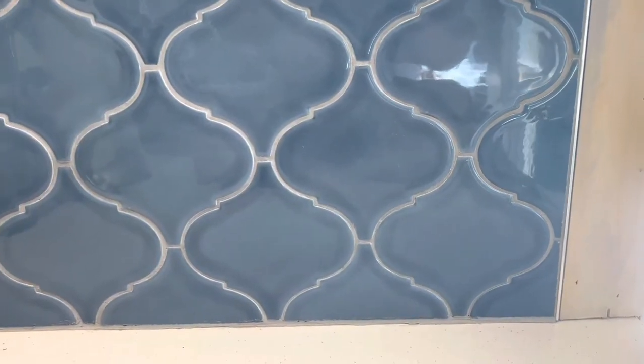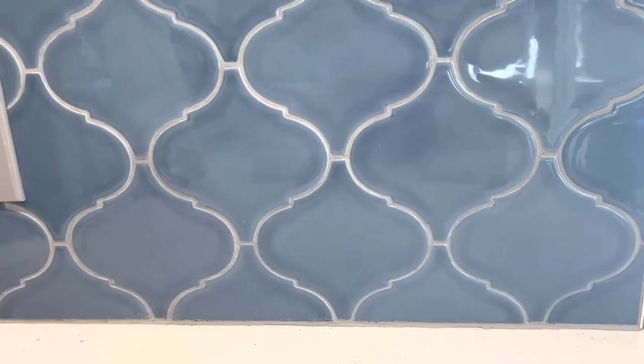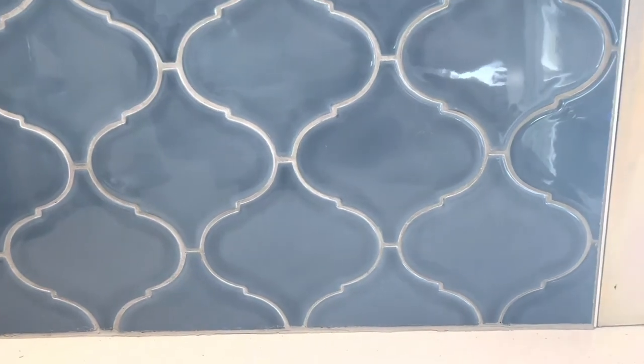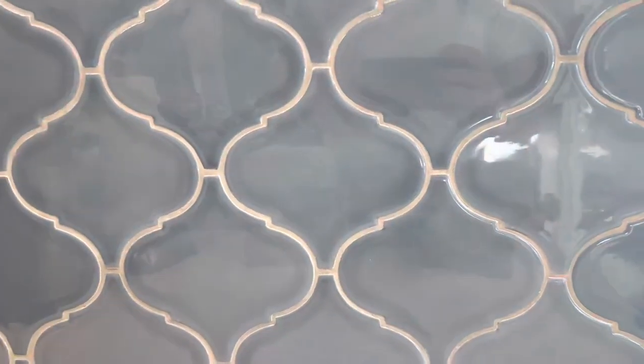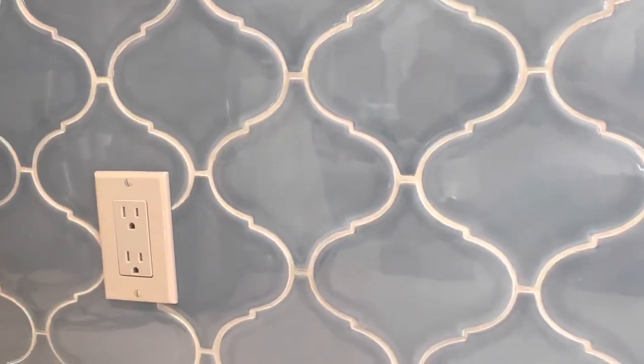Using that triangle, we're able to get perfect horizontal cuts, you see here on the bottom, perfect vertical cuts, you see here on the right, even combination cuts, and around the outlets.